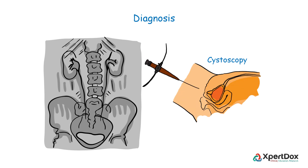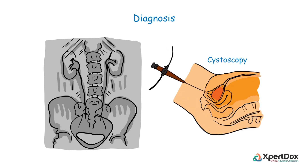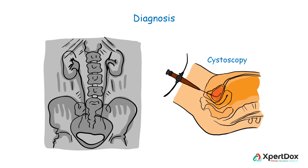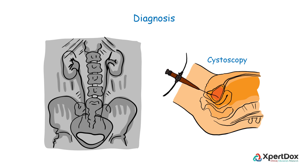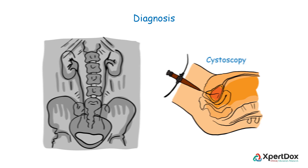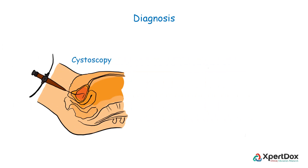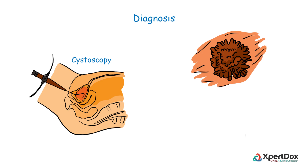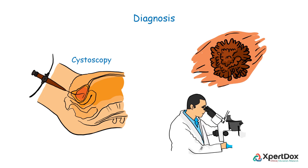Cystoscopy has an invaluable role in establishing the diagnosis, as it facilitates looking inside the bladder and urethra to check for cancerous areas. It also helps in removing tissue samples, which are microscopically studied to confirm or rule out the presence of cancer.